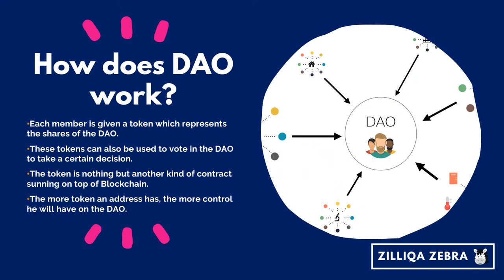How does the DAO work? Each member is given a token which represents the shares of the DAO. These tokens can then be used to vote in the DAO to take a certain decision. The token is nothing but another kind of contract signing on top of blockchain. The more tokens an address has, the more control it will have on the DAO.